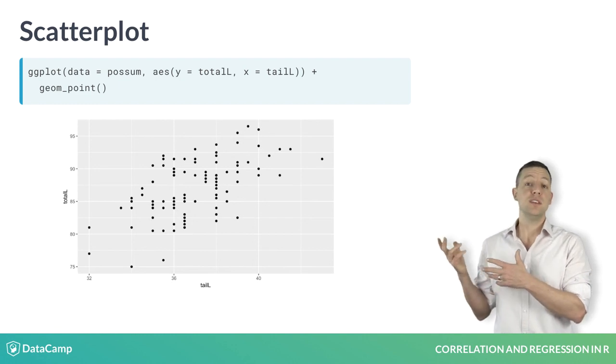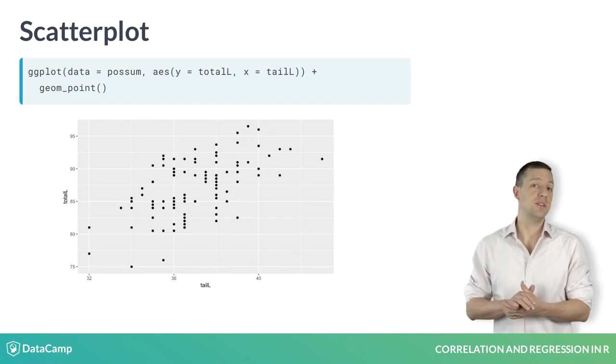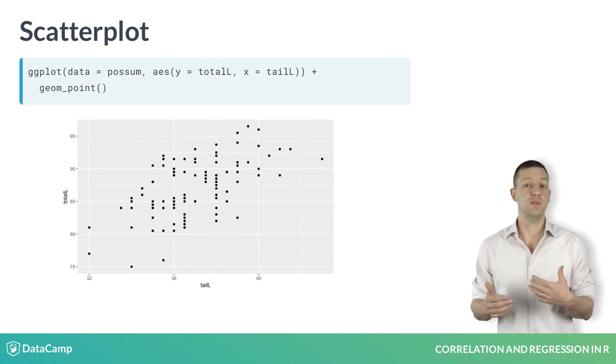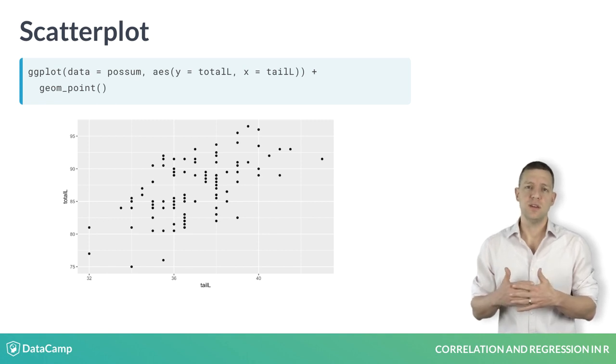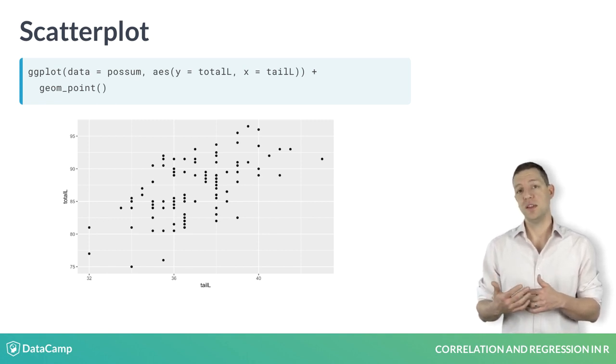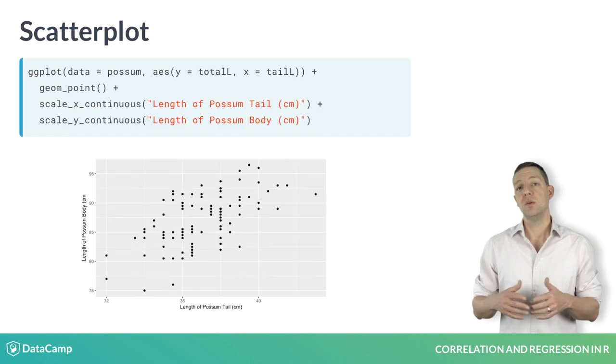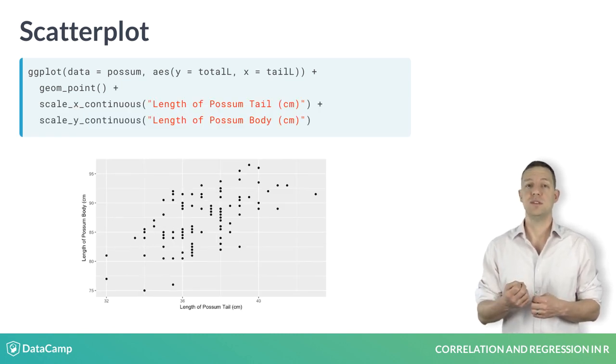Here, we can see a scatter plot of the total length of a possum's body as a function of the length of its tail. Note that the axes have been labeled with the names of the variables automatically. For clarity, it is important to give your axes human readable labels. We can do that with the scale_x_continuous and scale_y_continuous functions.